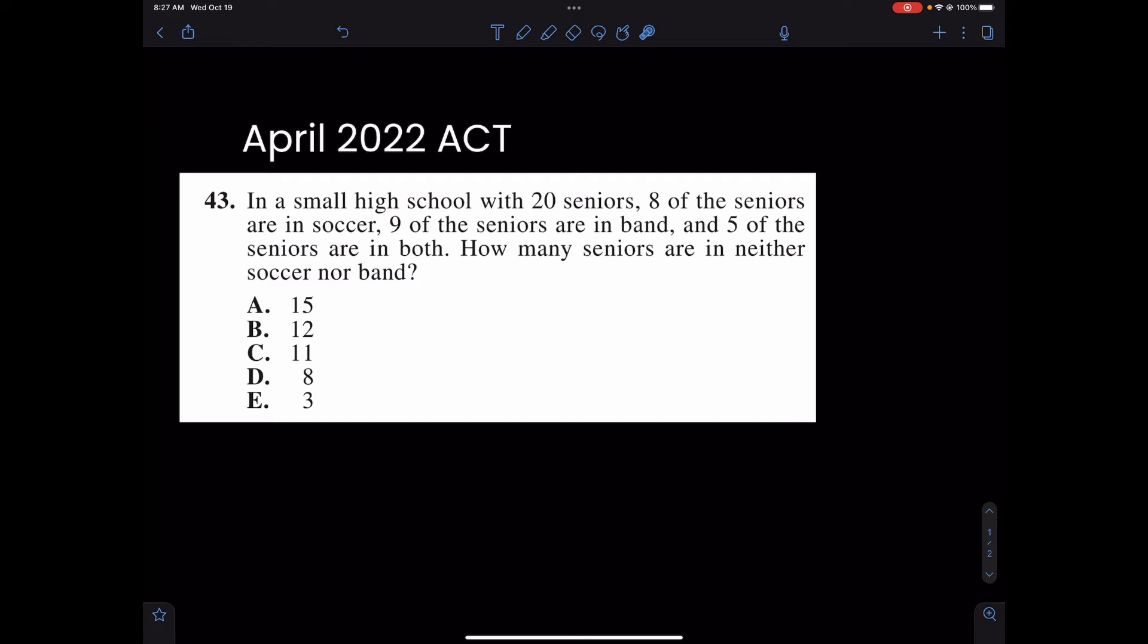Let's take a read. It says, in a small high school with 20 seniors, eight of the seniors are in soccer, nine of the seniors are in band, and five of the seniors are in both. How many of the seniors are in neither band nor soccer? Again, how many people are in neither band nor soccer? It's given us how many are both. This is band, this is soccer. This is, again, in that mindset or in that frame of a Venn diagram.